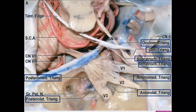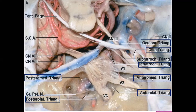Then you have the anteromedial triangle. These are the triangles of the cavernous sinus. Now we'll look at the triangles of the middle cranial fossa. There are two anteromedial and anterolateral triangles, and posteromedial and posterolateral triangles. The anteromedial triangle is between V1 and V2 — the ophthalmic and maxillary divisions — and the third boundary corresponds to the line between the superior orbital fissure and the foramen rotundum.